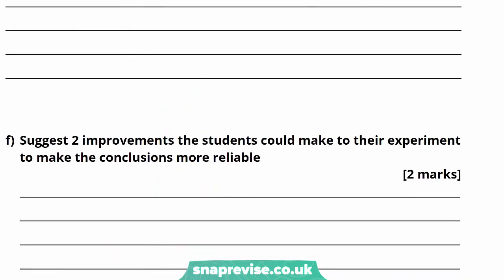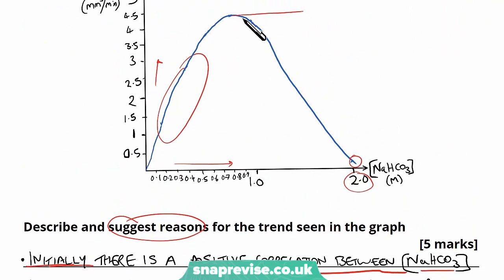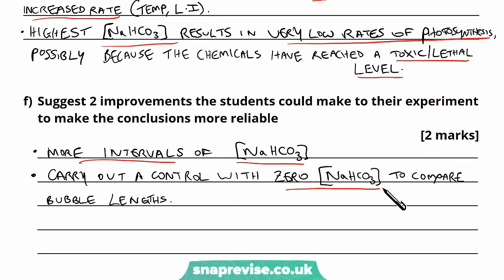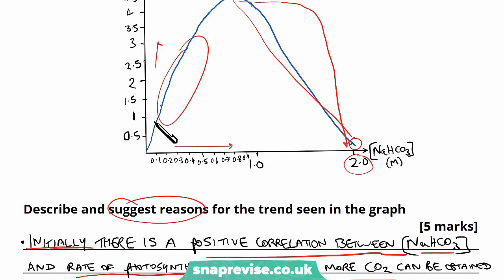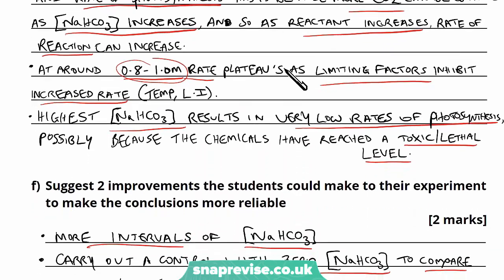The next part says: suggest two improvements students could make to their experiment to make conclusions more reliable. Think about limitations and problems, and that can lead you to a logical improvement. I've suggested making more intervals of CO2 concentration — looking at the graph they jumped from 1 to 2, so more intervals would show whether there's a specific concentration at which CO2 becomes damaging. The second point: carry out a control with zero CO2 to compare bubble length, since the plant may still produce a bubble even with no sodium hydrogen carbonate. You could also suggest more replicates or using different plant masses.